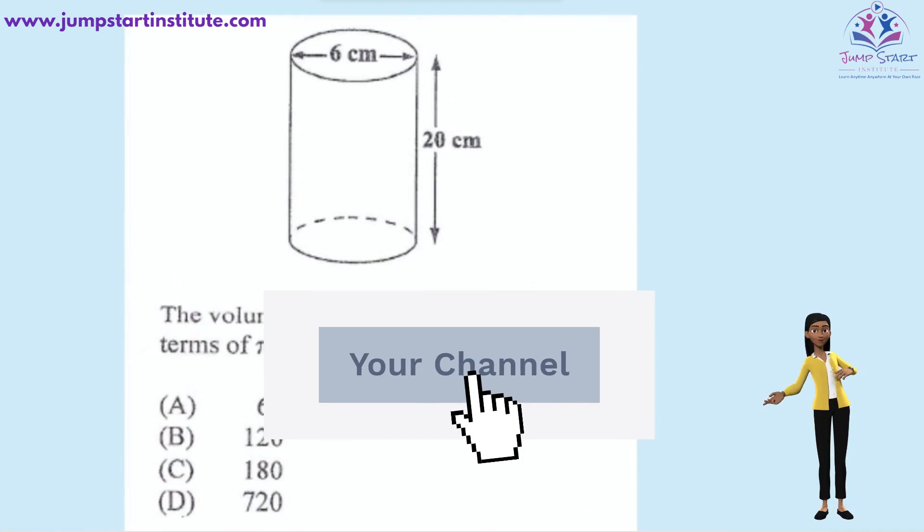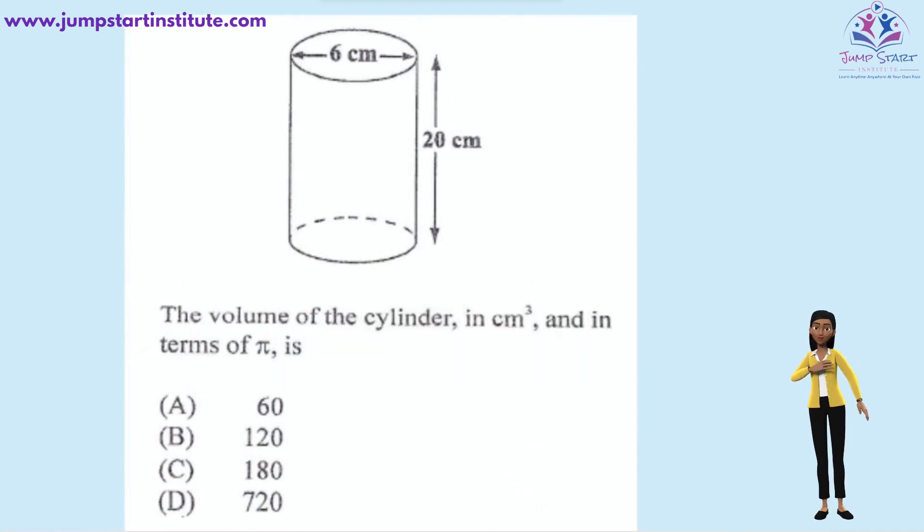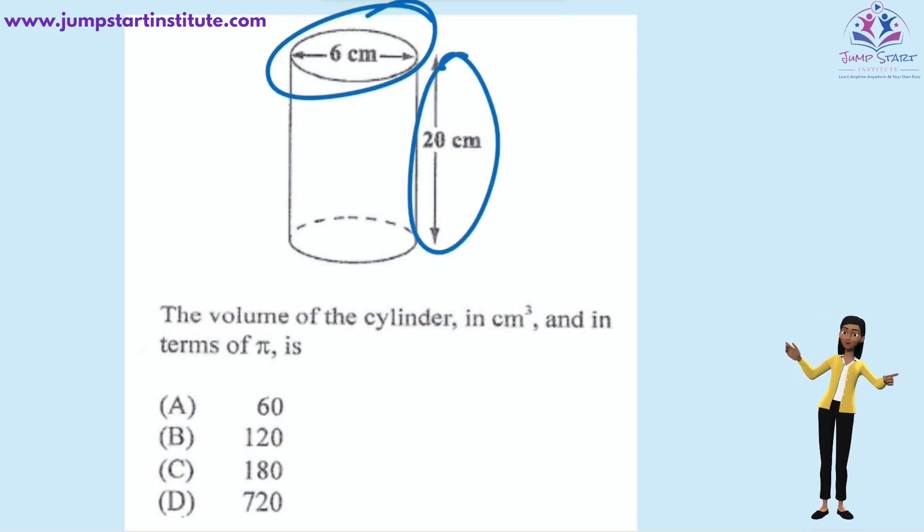Volume of the cylinder in centimeter cube and in terms of pi is? To calculate the volume of the cylinder, we say the area of the cross section multiplied by the height. The cross section is a circle. Therefore, the area of a circle would be pi r squared.